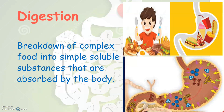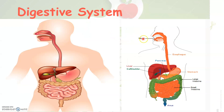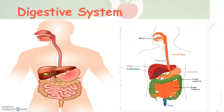Now let us see which organs in our body help in the process of digestion. This is called the digestive system: mouth, food pipe — otherwise called as esophagus — stomach, large intestine, small intestine, liver, and pancreas. These are the organs that help in the process of digestion, and all these organs together are called the digestive system.